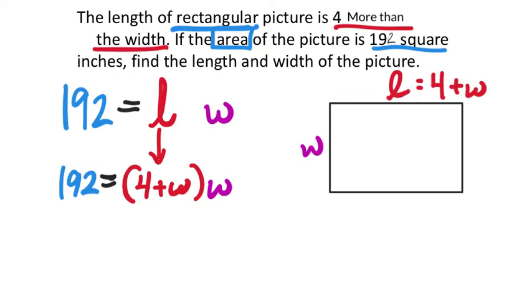Now this equation we can continue to solve by distributing the W. So 4 times W would be 4W, and then W times W would be W squared. That's positive W squared, by the way. So now I've got 192 equals 4W plus W squared.